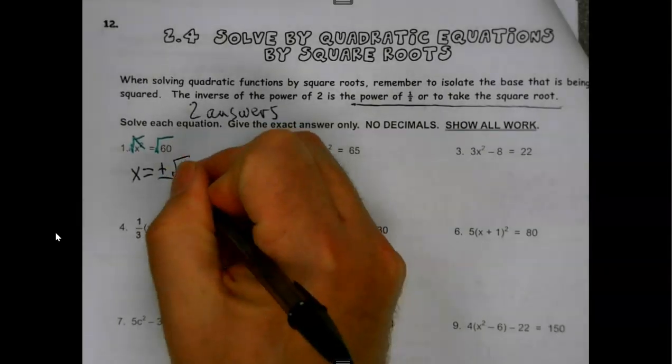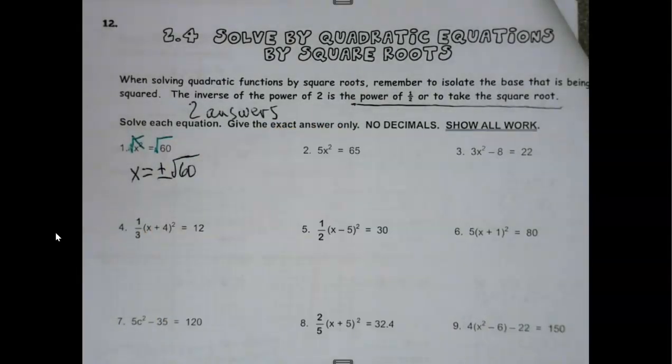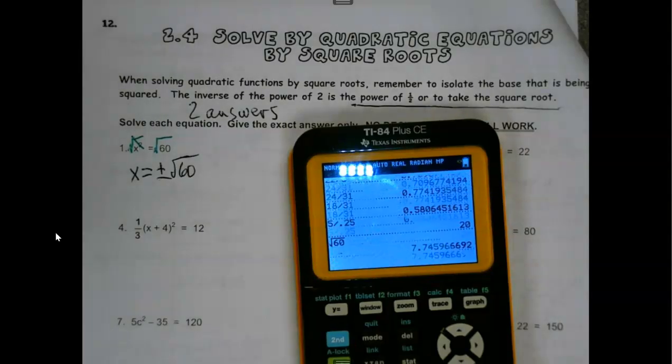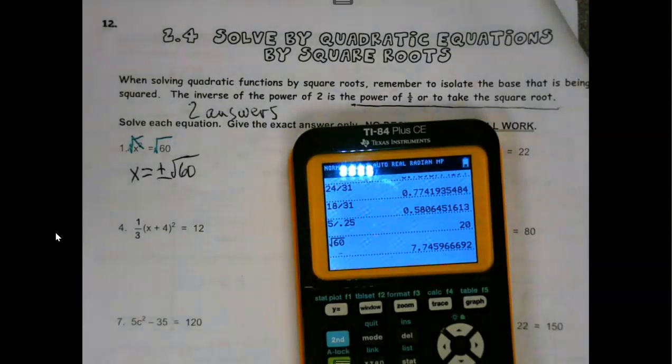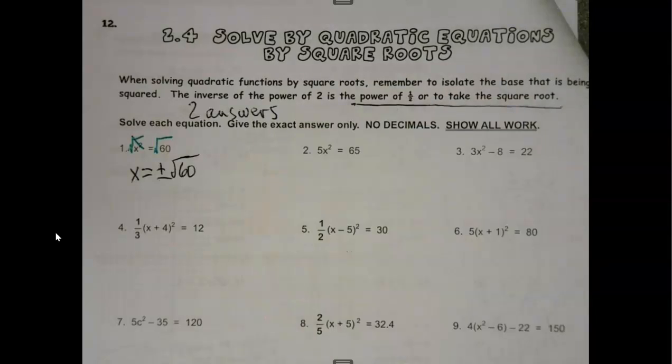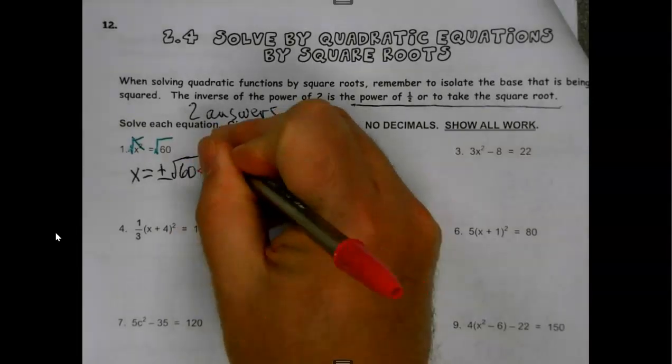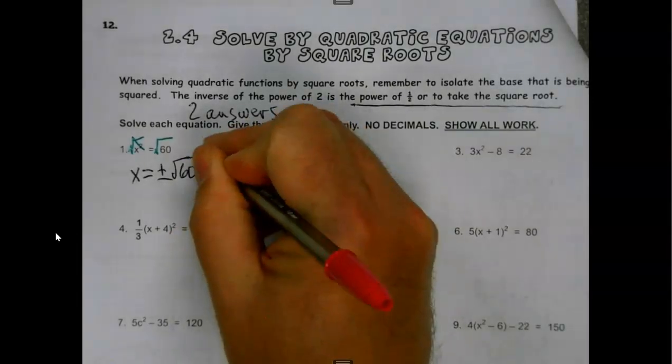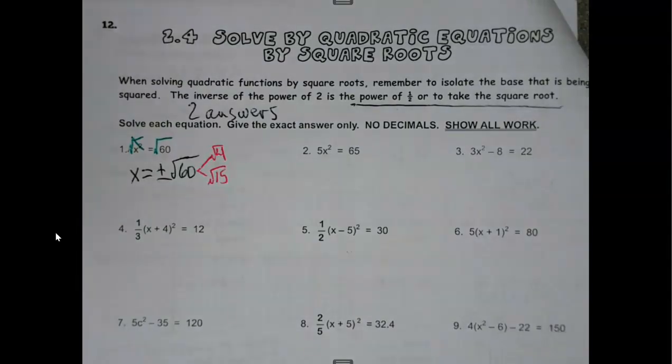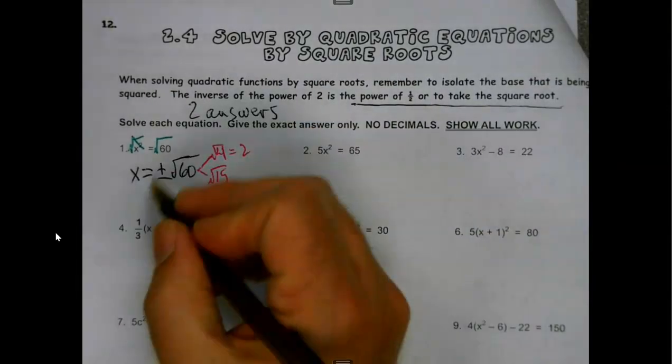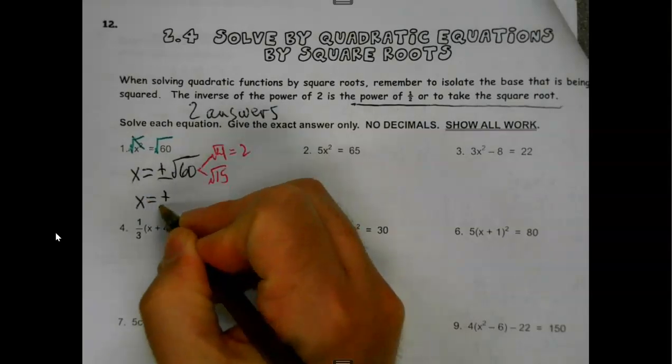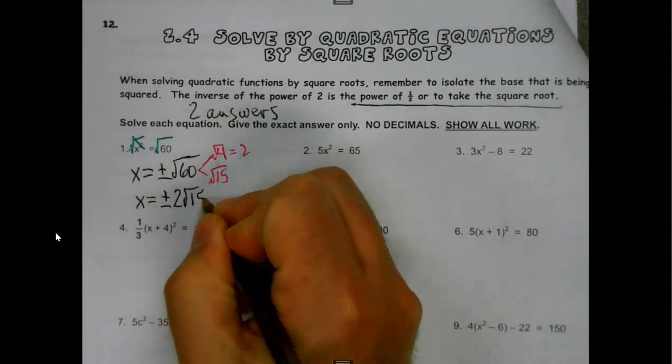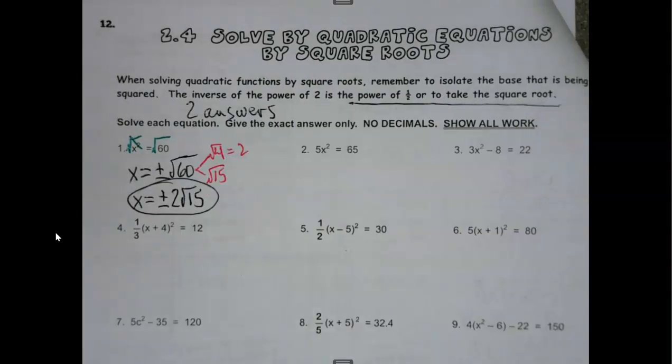Square root of 60, I don't think that's a nice one. We're not doing decimals. So, you know the question that's coming. Name me a perfect square that goes into 60. Four. So, we got four and 15. If you forget, start taking some perfect squares and dividing them with your calculator so you find one that goes in nice.